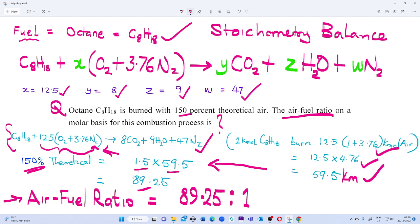Therefore our calculated air-fuel ratio gives us 89.25 to 1. That is, in the combustion chamber when 89.25 kilomoles of air is burned, then the equivalent ratio of 1 kilomole of fuel is burned. Thank you very much.